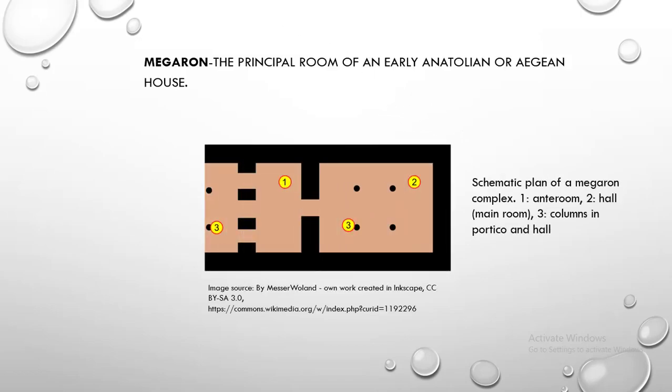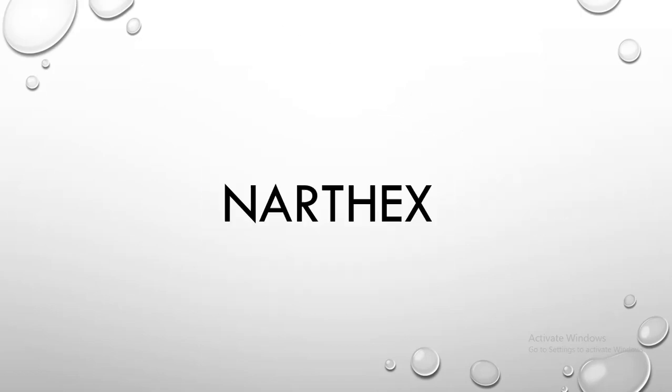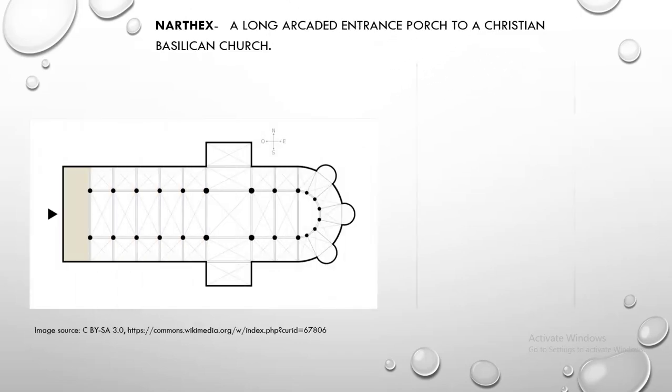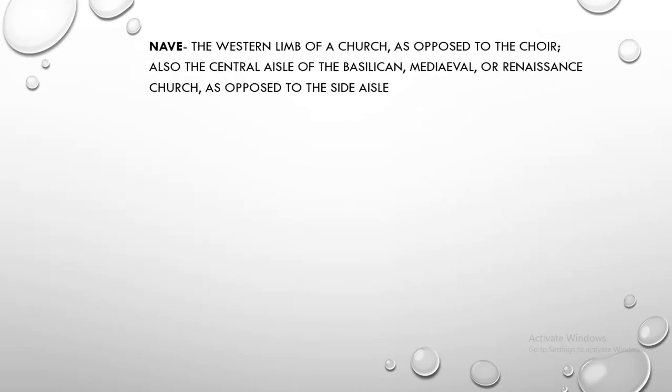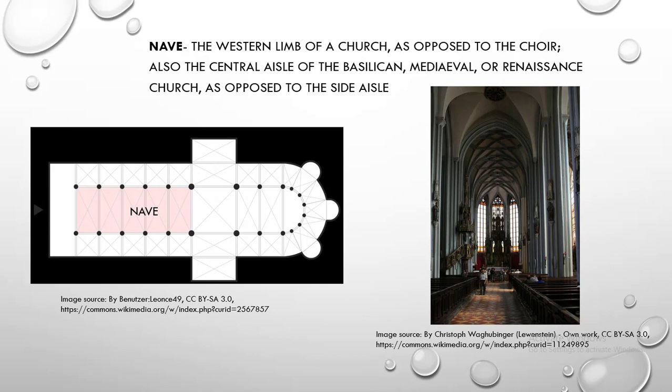Megaron. Megaron is the principal room of an early Anatolian or Aegean house. Narthex. Narthex is a long arcaded entrance porch to a Christian basilican church. Nave. Nave is the western limb of a church, as opposed to the choir; also the central aisle of the basilican, medieval, or Renaissance church, as opposed to the side aisle.